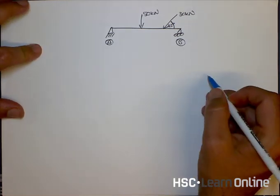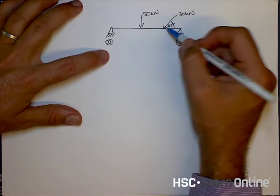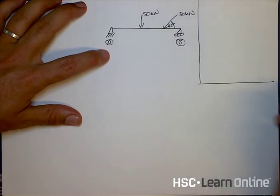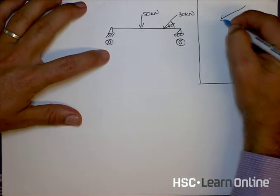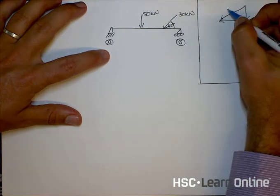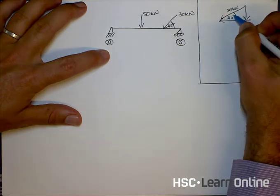The first thing that we're going to need to do is break this force of 30 kilonewtons into its vertical and horizontal components. So what I'm going to do is just on the side over here break this force into its vertical and horizontal components. So that's 30 kilonewtons at an angle of 45 degrees.